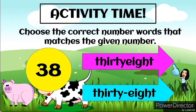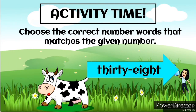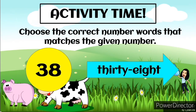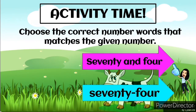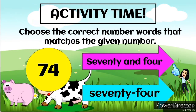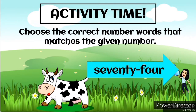That number is 38. Which is the correct answer? Number one is correct — great job! The correct answer is thirty-eight, with a hyphen in the middle. Next, we have 74. What is the correct answer? Great job! The correct answer is seventy-four, with a hyphen in the middle.